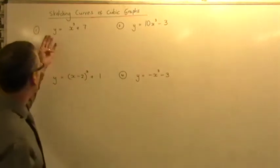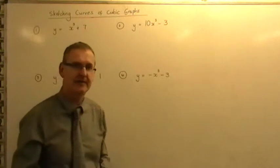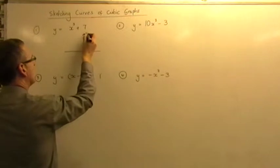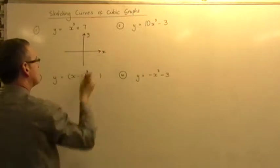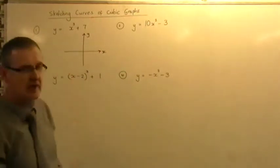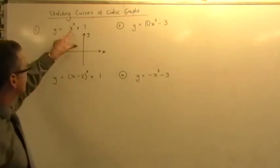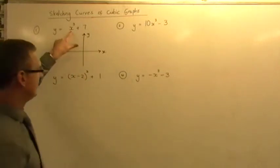Let's have a look at the first one: y equals x cubed plus 7. So I'm going to very quickly just do a little crosswire, like so, y and x axis, and I need to sketch y equals x cubed plus 7. Well, looking at that, I can immediately see it's an x cubed curve, which basically means...